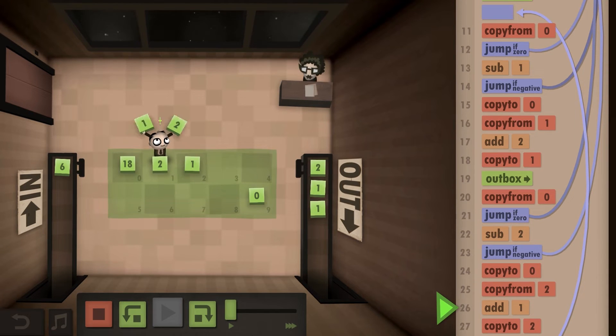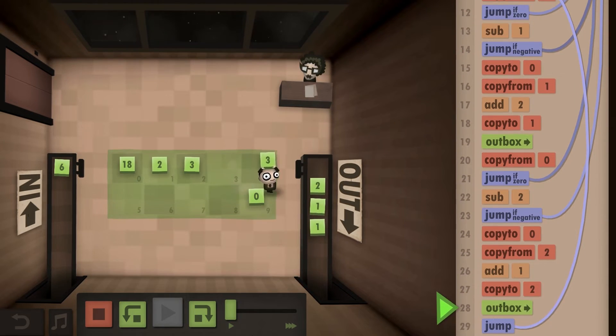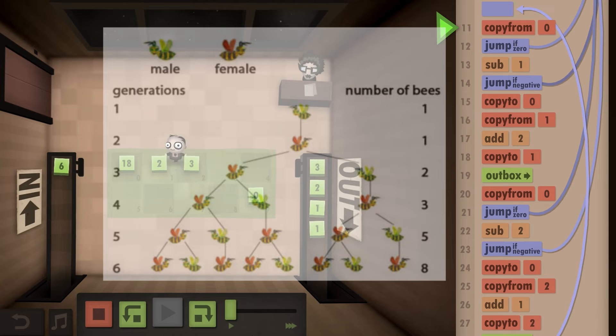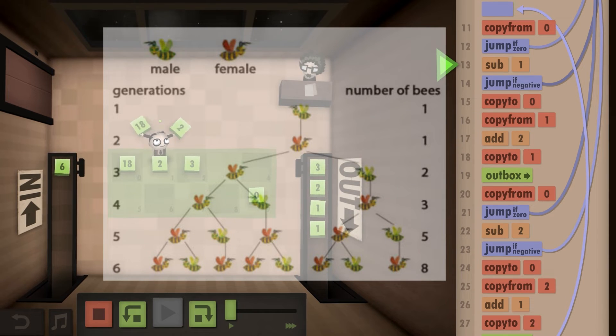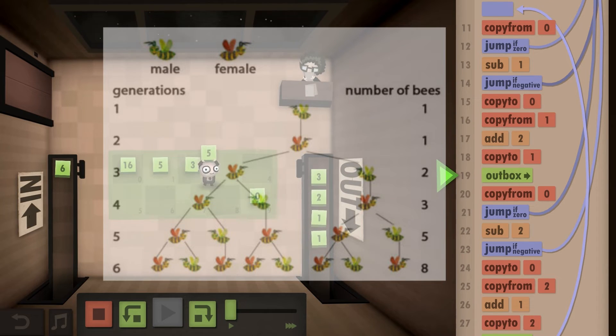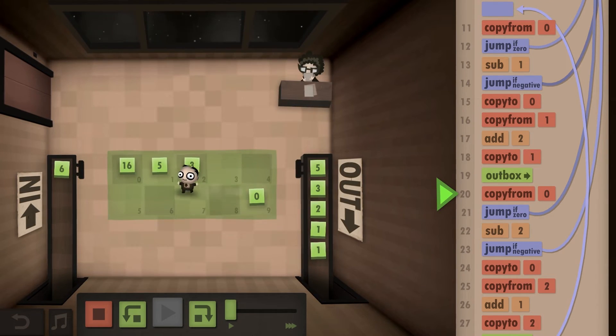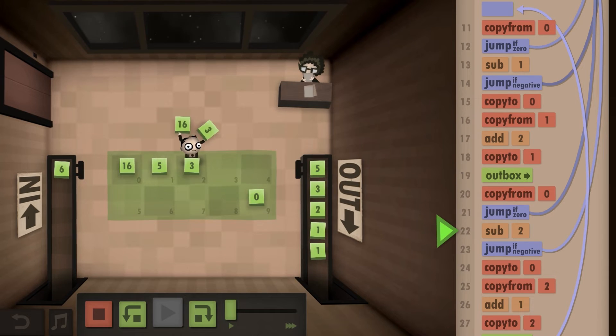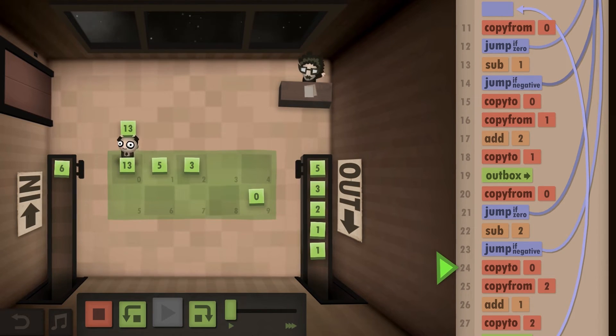A more realistic example which actually is a Fibonacci sequence is the breeding of bees, specifically honeybees. It's called the bee ancestry code. The way it works is if an egg is laid by an unmated female, it will produce a male. If the egg is fertilized by a male, it will hatch a female.